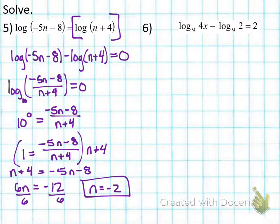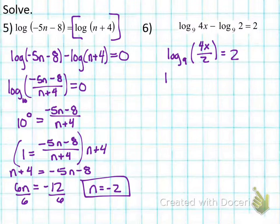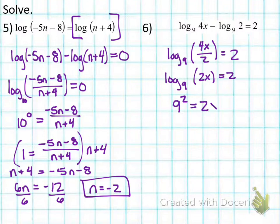Moving on to example 6, I see two logs with the same base and subtraction between them, so I combine them using the quotient property. That gives me log base 9 of 4x divided by 2 equals 2. I can simplify 4x divided by 2 to get log base 9 of 2x equals 2. The log is now isolated, so I rewrite this as an exponential equation: 9 squared equals 2x. 9 squared is 81, and dividing by 2 gives x equals 40.5.